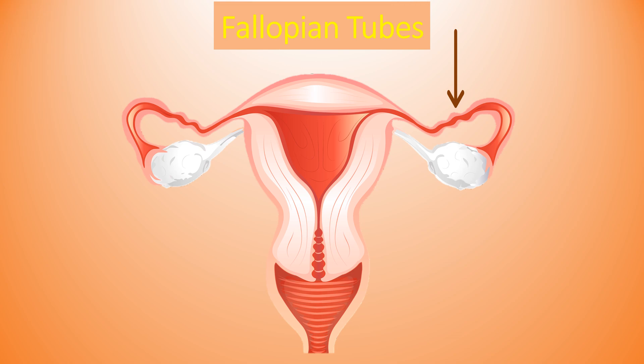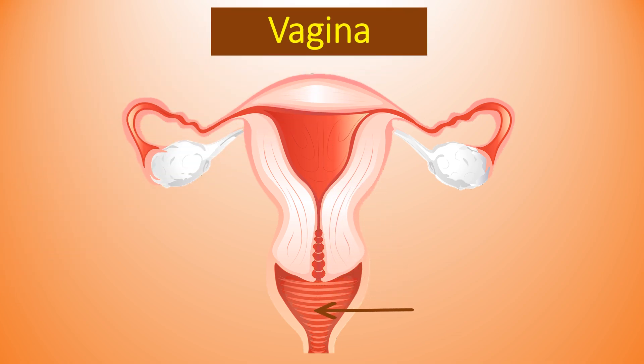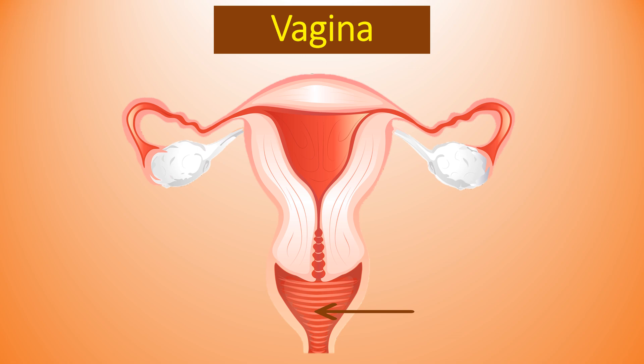Next is the uterus. The figure indicates the uterus — it is one of the main organs of the female reproductive system, which receives the fertilized egg and helps in the development of the egg during pregnancy.